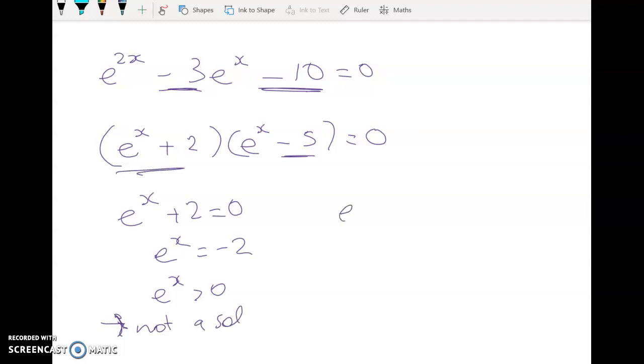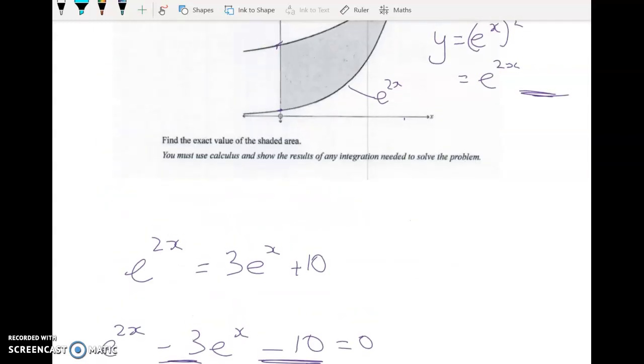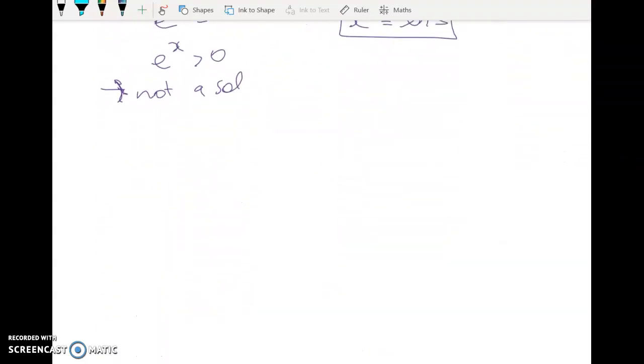Right, so we've ditched this one, and it must be this one that e to the x is equal to 5. So x is equal to the natural log of 5. Now we've got our two limits. We know which function is the top one. We are good to go, right?